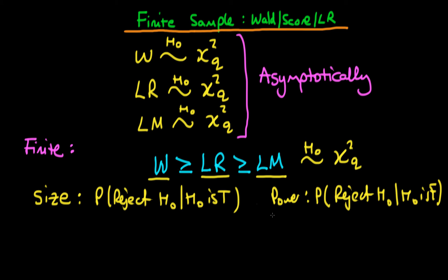It turns out that these two properties of a statistical test are normally in opposition: if the size of a statistical test decreases, then the power also decreases. So whereas the size decrease is desired, the power decrease is not. If we compare the Wald, the likelihood ratio, and the LM statistic in terms of these two properties, the size of the Wald statistic is going to be greater than or equal to the size of the LR statistic, which in turn is going to be greater than or equal to the size of the LM statistic. If the Wald had a size of 5%, we would reject the null hypothesis fewer times under the LM statistic because it is smaller in value — hence the size of the LM statistic is smallest.